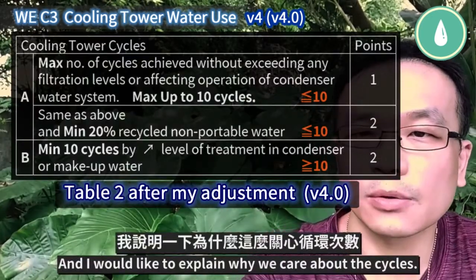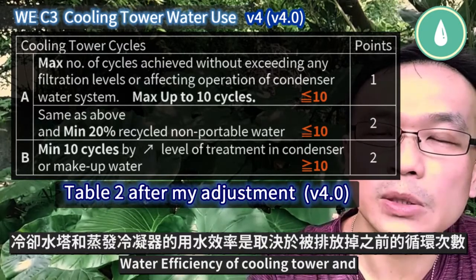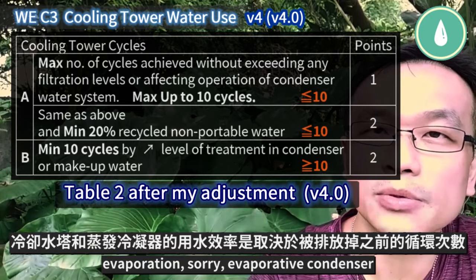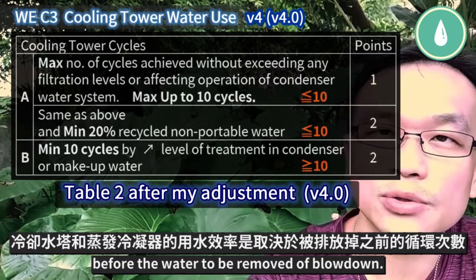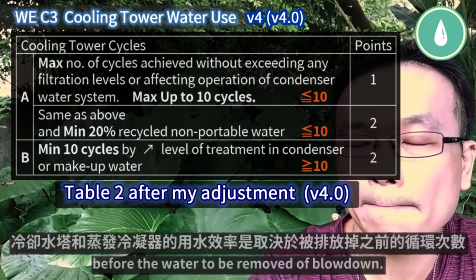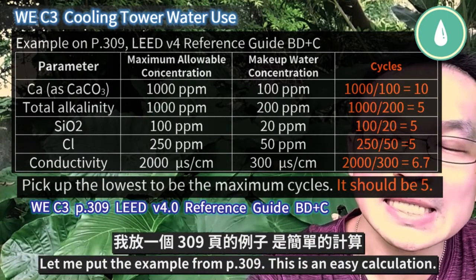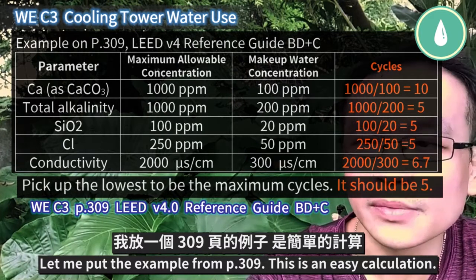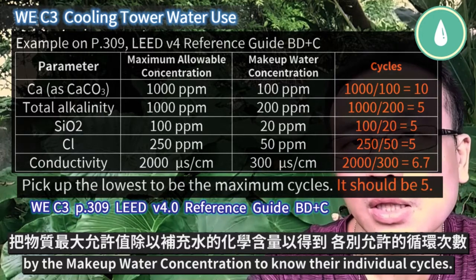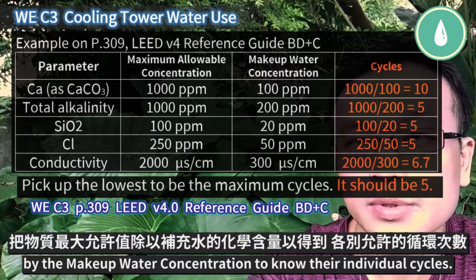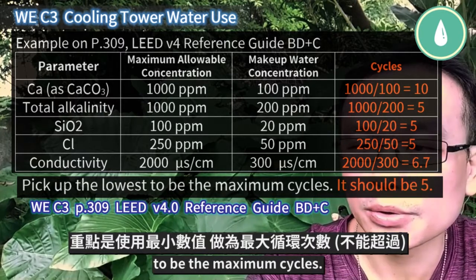I would like to explain why we care about cycles. Water efficiency of a cooling tower and evaporative condenser is measured in recirculation cycles before the water is removed by blow down. Let me put the example from page 309 — this is an easy calculation. You divide the maximum allowable concentration by the makeup water concentration to find individual cycles, then pick the lowest number as the maximum cycles.